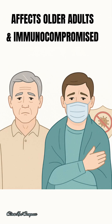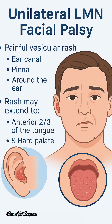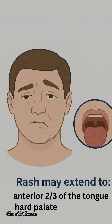It most commonly affects older adults and immunocompromised individuals. Patients typically present with unilateral lower motor neuron facial nerve palsy. A painful vesicular rash appears on the external ear canal and the pinna, and around the ear.